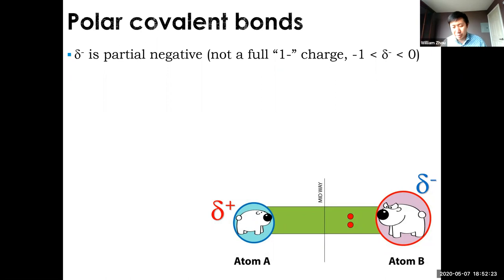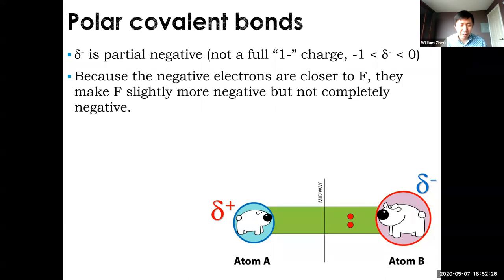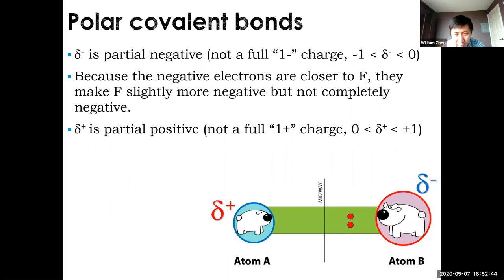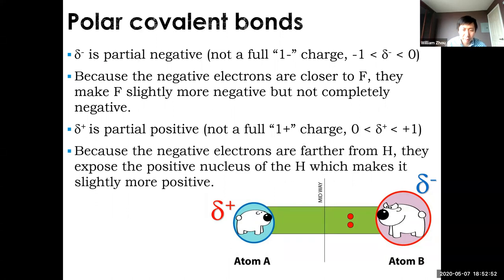Likewise, with delta-positive, you don't have those electrons most of the time — you're more positive than you should be — but since that electron still comes back sometimes, you don't have a full 1+; it's between 0 and 1+. So you have a partial positive charge. We're talking about partial charges resulting from unequal sharing of electrons — that's a polar covalent bond.